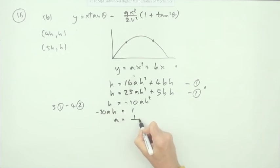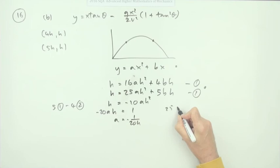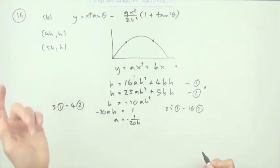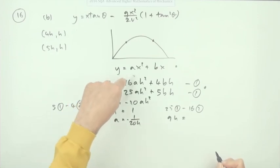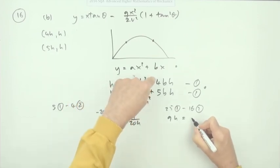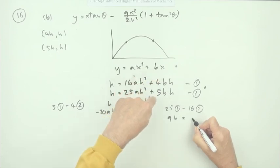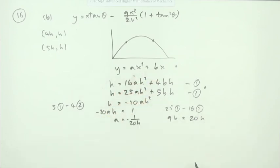To get b, do 25 of one minus 16 of two, which will give 25 take away 16 is 9h, they disappear, that's 100 minus 80 is 20 b h. Taking that across and dividing, b is 9 upon 20. That was the next mark.